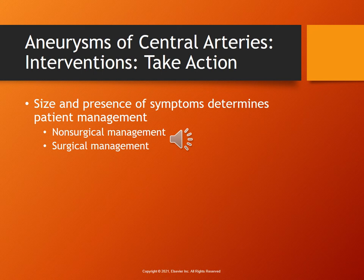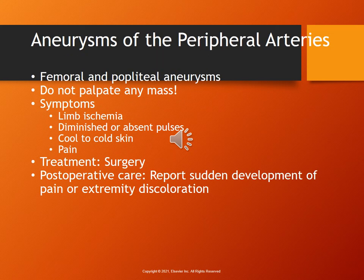Surgically, they may have to go in — sometimes it's an elective procedure and sometimes it's emergent. If you have a AAA that's rupturing, it's an emergency. The surgery is called an aneurysmectomy. Aneurysms of the peripheral arteries are discussed on page 719. You don't want to palpate any mass that you see — especially if it's pulsating, don't mess with it. Symptoms are limb ischemia, diminished or absent pulses, cool to cold skin, and pain. Treatment is surgery, and any sudden development of pain or extremity discoloration after surgery could indicate another clot and the limb is ischemic again.